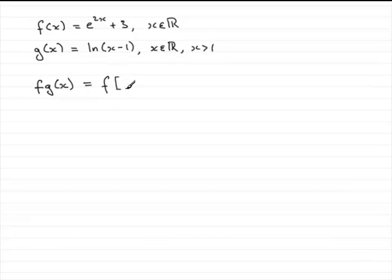So it's f of g of x and g of x is the natural log of x minus 1. So we do that. Now wherever we see an x in f of x, we've got to replace it with the natural log of x minus 1.